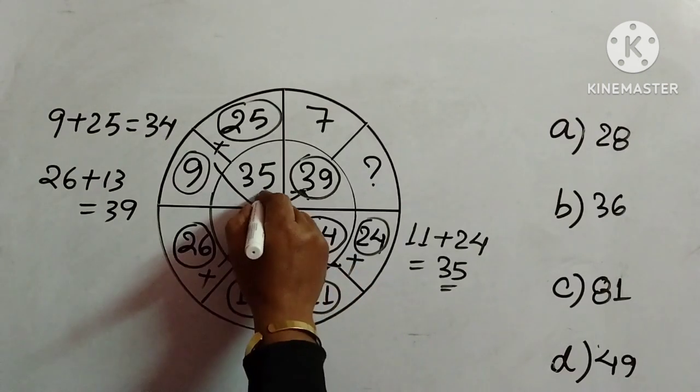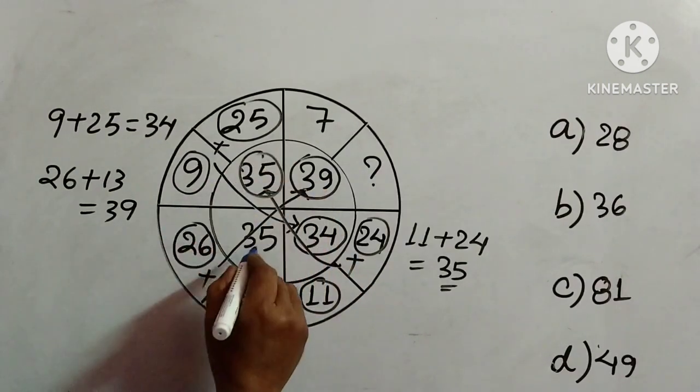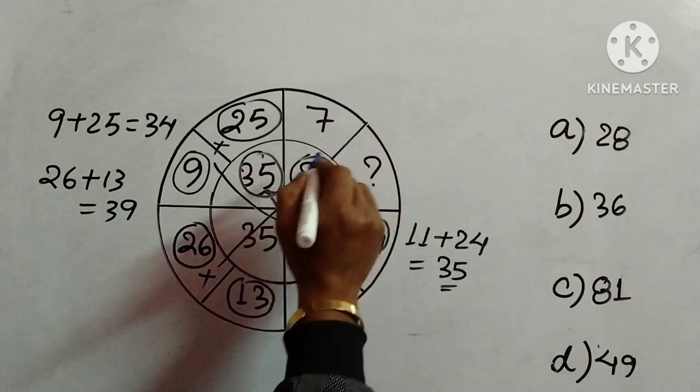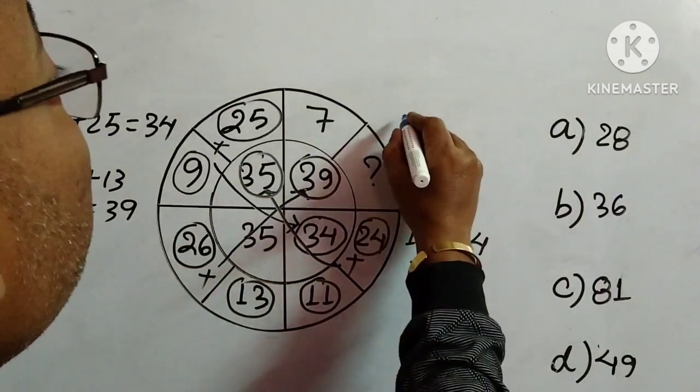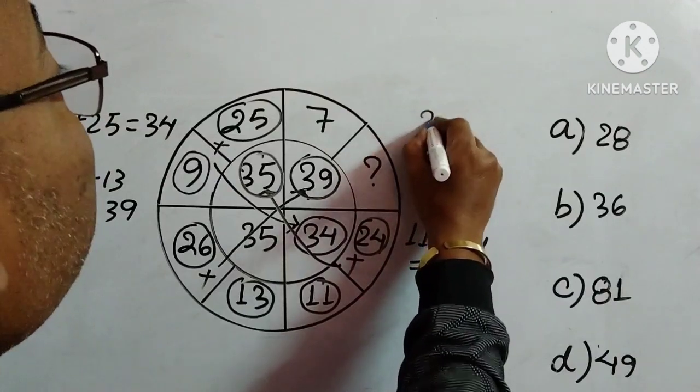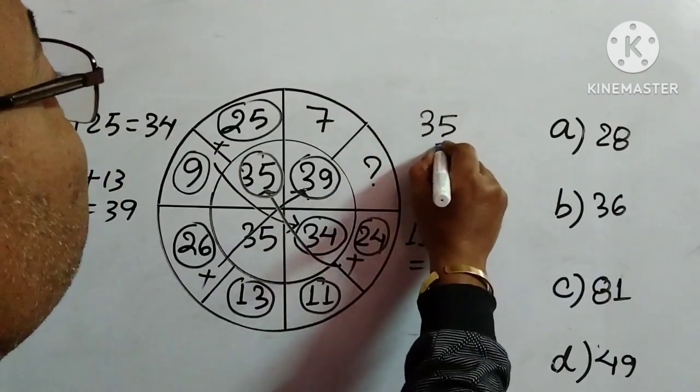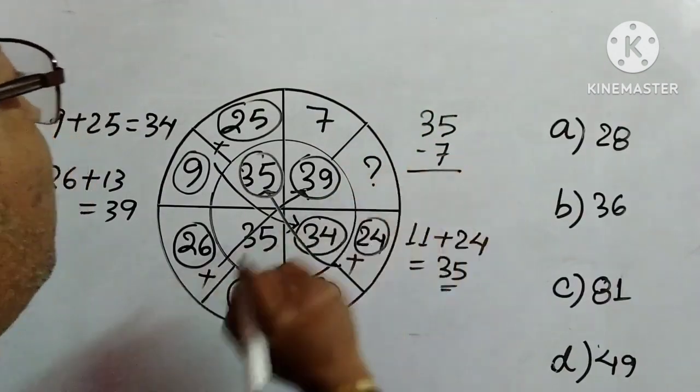Which is left? This one is left, and this number we have to find. This is given, so what we have to do is subtract 7 from 35.